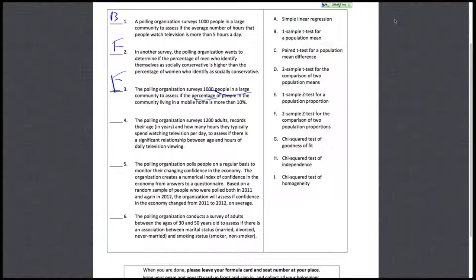Number four says we want to know the relationship between age and hours of daily television viewing, where both age and hours of television viewing are continuous variables. The only method we know to analyze that is a simple linear regression because both variables are continuous.